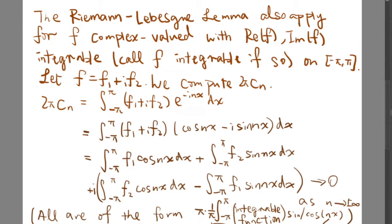where cn is the coefficient of the complex Fourier series of f. 2π cn equals the integral from negative pi to pi of (f1 + i f2) times e^(-inx), which equals the integral from negative pi to pi of (f1 + i f2) times (cos nx - i sin nx). If we separate the real part and imaginary part, we get this expression.